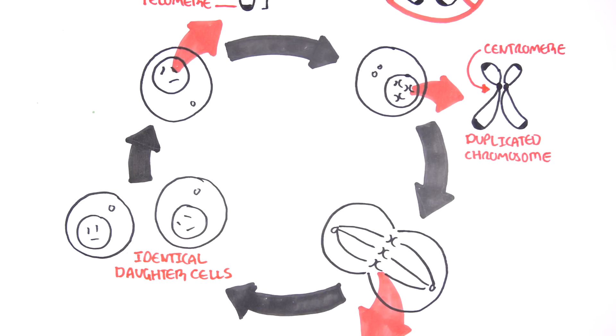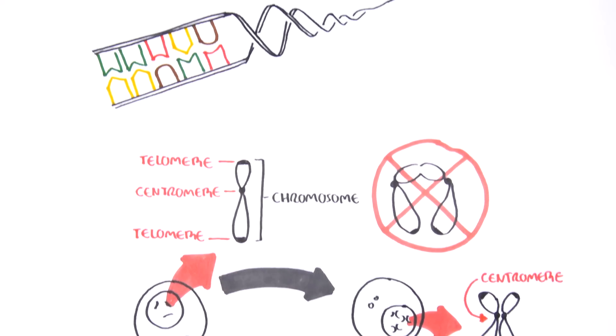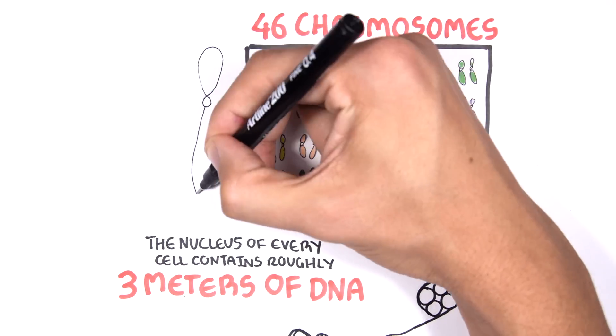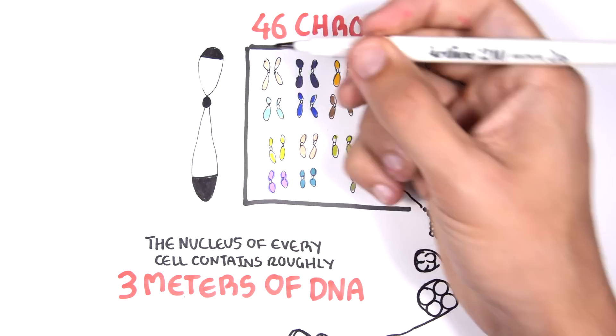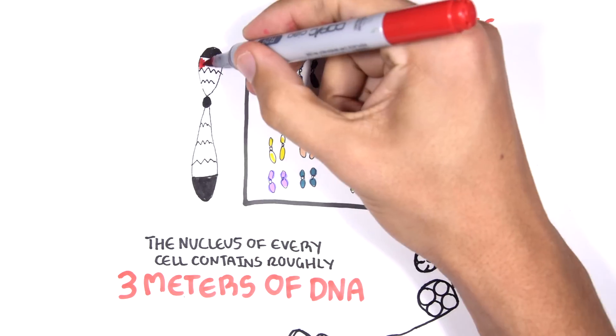When any part of this cycle goes wrong, cancers can develop. The new study described a new type of mutation, a chromosome scale mutation, responsible for creating a chromosome many times larger than normal chromosomes.